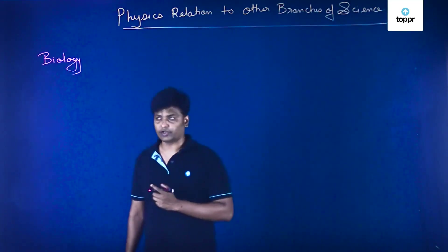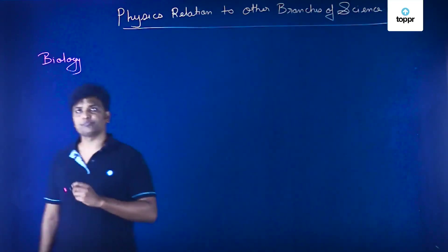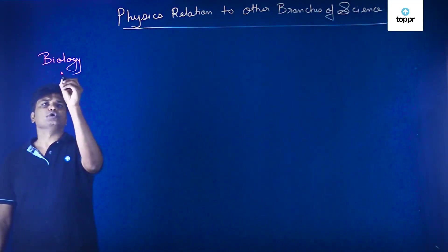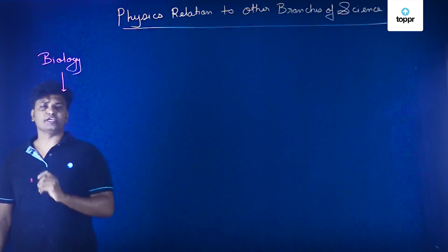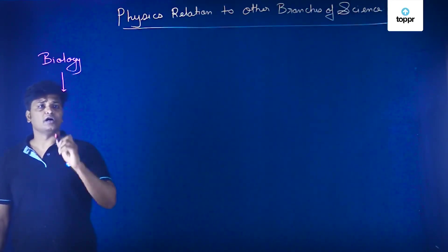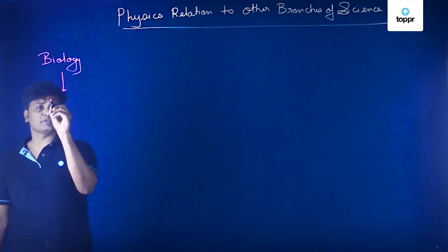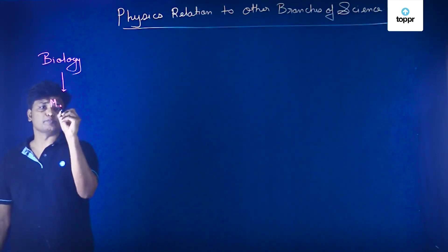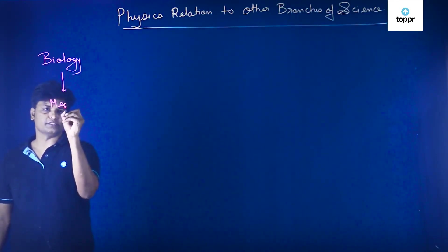And if the object is too small, then we can use an electron microscope, which is again an application of physics. Using this biology, we have something which is called medical science.